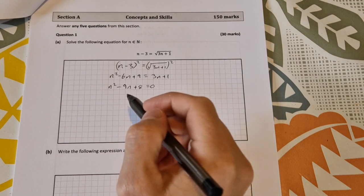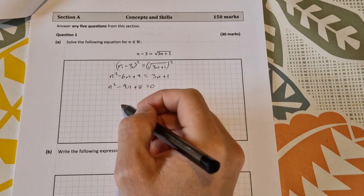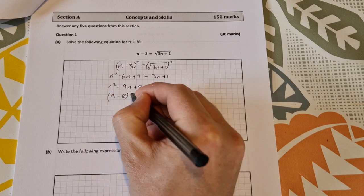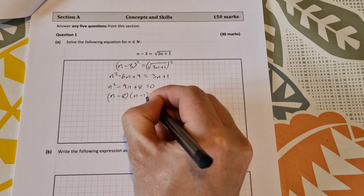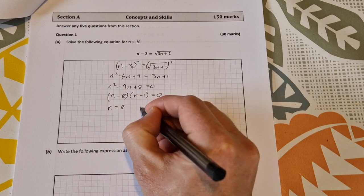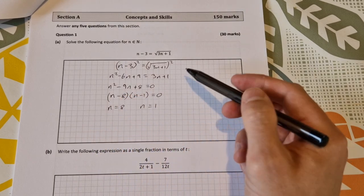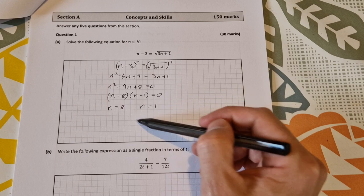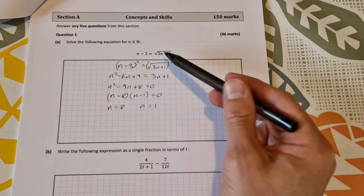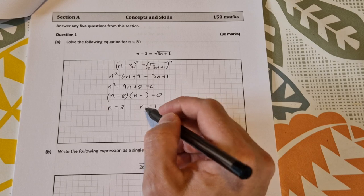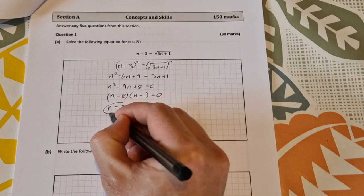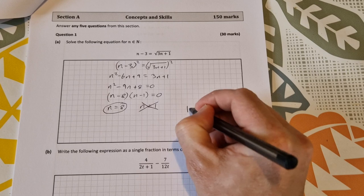And then factorising that out the factors of that quadratic are n minus 8 by n minus 1 which gives us two solutions n equal to 8 and n equal to 1. Because it's a surd equation you need to sub the two of them back into the original equation to see which one doesn't work and it works out that n equal to 1 does not work and the answer is n equal to 8 and that's worth 10 marks.